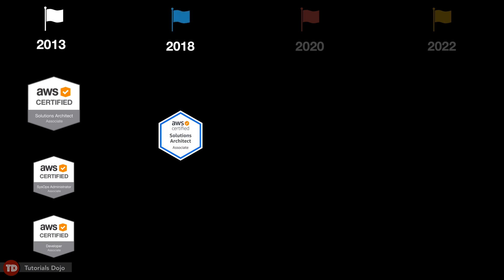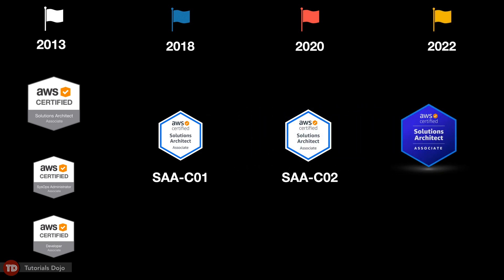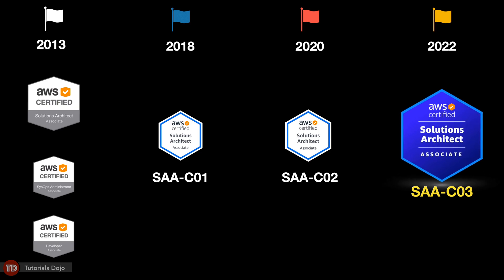After almost five years since its initial release, an updated version of the AWS Certified Solutions Architect Associate certification was launched in February 2018 with an exam code of SAA-C01. After two years, AWS released another version with an exam code of SAA-C02 in March 2020, followed by yet another new exam version released in August 2022 with an exam code of SAA-C03, which contains new services recently released by AWS. As you can notice, the last digit of the exam version code increments for every new version of the SAA exam.